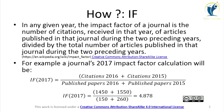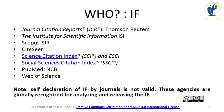So if citations of 2016 are 1450 and citations of 2015 are 1550, we add them up and divide by the total number of published papers in 2016 (150) and 2015 (260). It comes to 4.878, so the impact factor will be 4.878. Now let's look at who provides the impact factor.